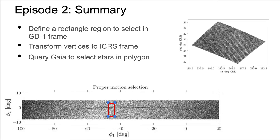We will be working in two reference frames: the GD1 reference frame, which defines the phi1 axis along the direction of the stream and the phi2 axis perpendicular to the stream, and the International Coordinate Reference System (ICRS), which defines the familiar right ascension and declination coordinates. The GD1 reference frame is useful for visualizing what we are selecting and identifying in the stream, but is very specific to GD1 and not useful for anyone else. For this reason, the Gaia catalog is in the more general ICRS coordinate system.